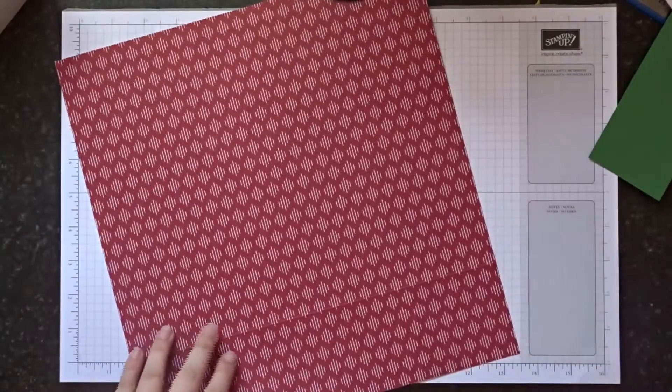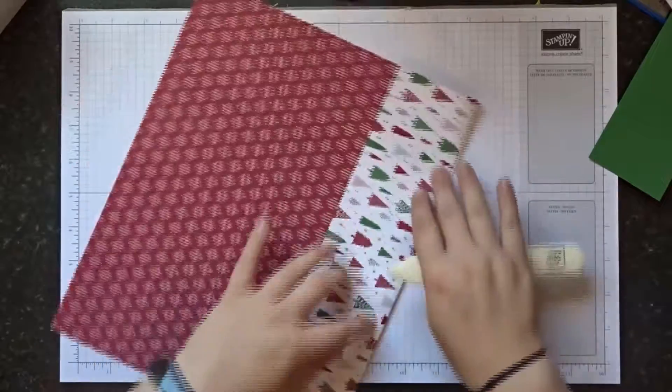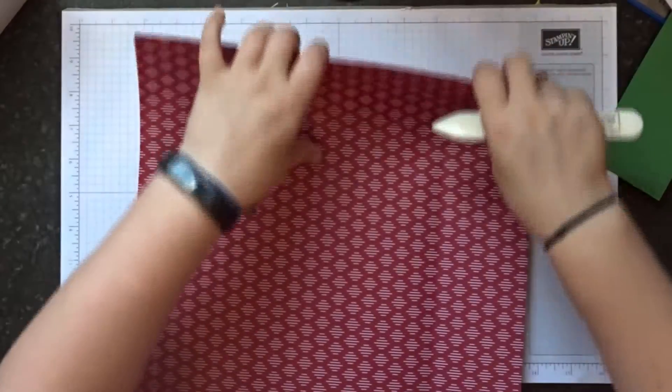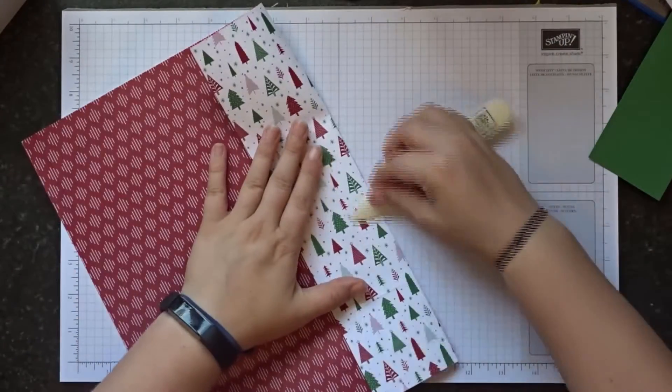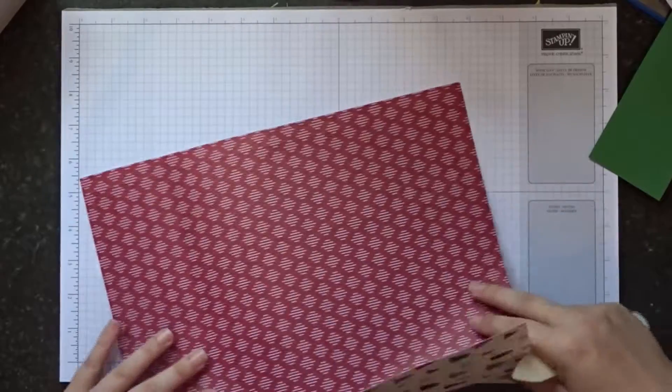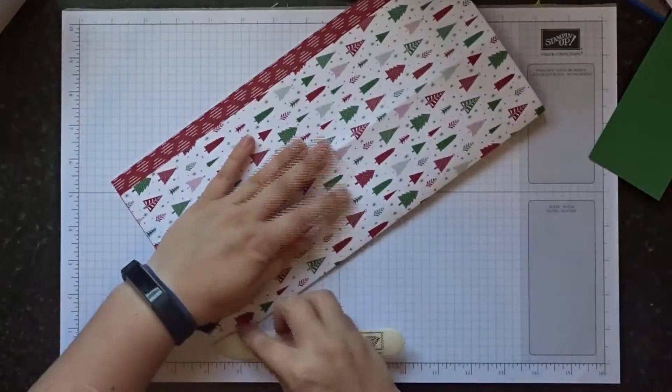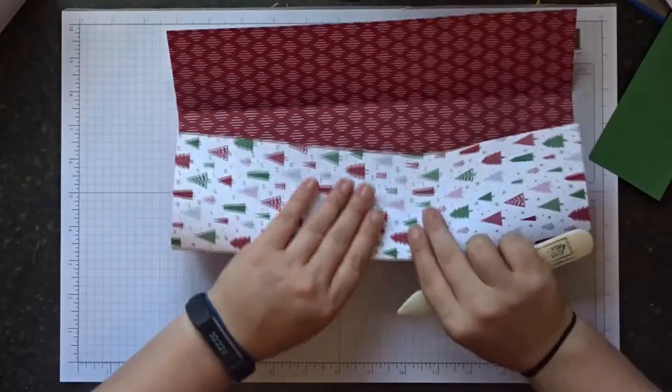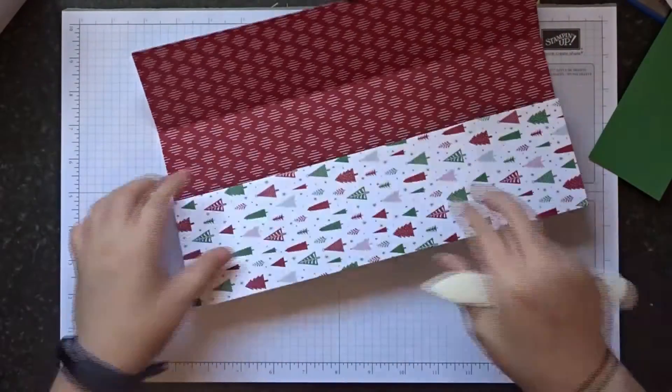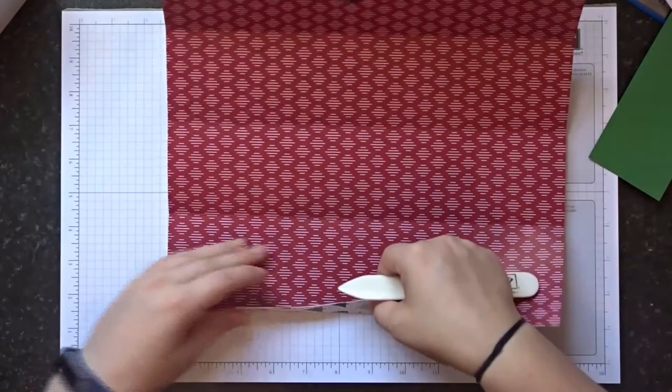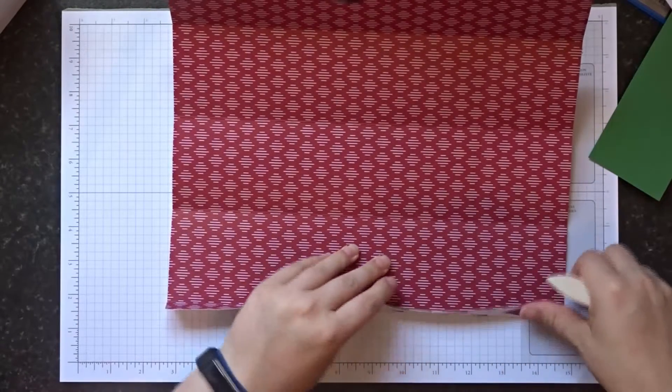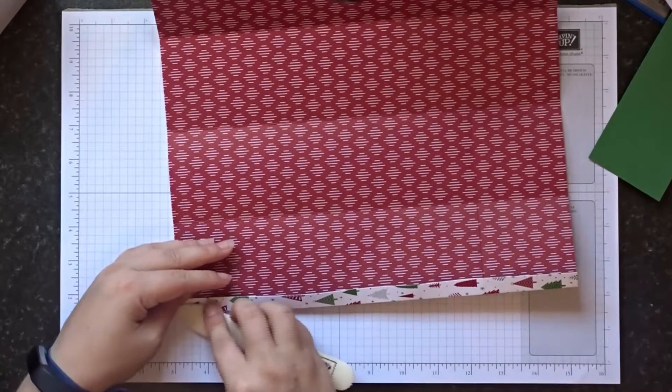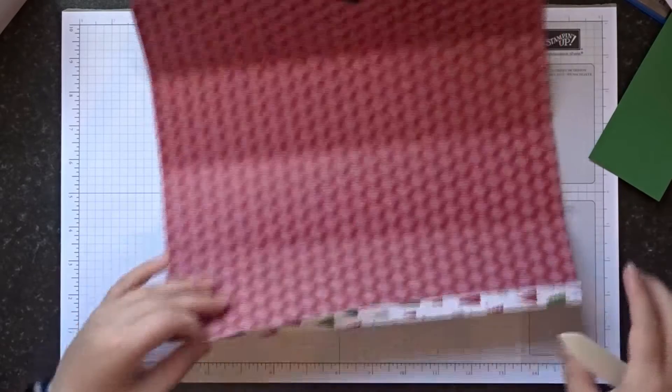So grab your bone folder and we'll do some folding and burnishing. Just be careful with this as it is DSP so it is slightly thinner. I've just remembered we've got one more bit of scoring to do, I have forgotten, so I'll grab that in a second. So just be gentle with it. With this edge, just fold it by hand first and work your way along because you don't want to rip this when you burnish it.